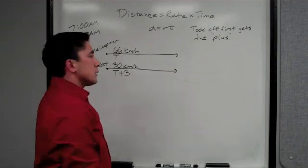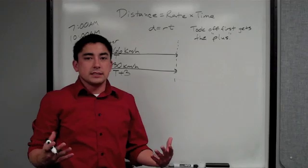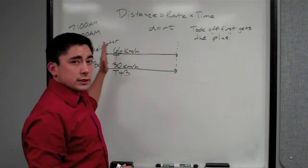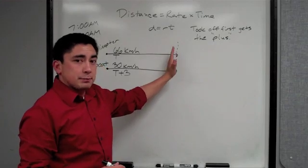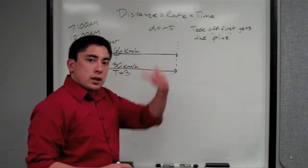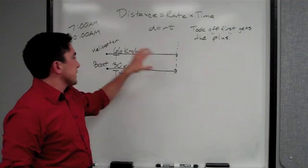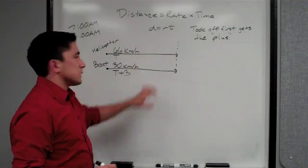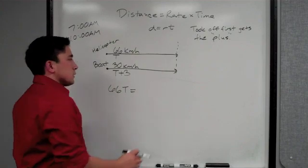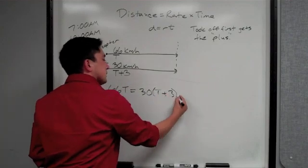We're talking about when will the helicopter overtake the boat? We're not going to add these distances because we don't know a total distance in between. They're leaving from the same spot, ending up at the same spot. So we can say that this distance is equal to this distance. So 66T equals 30(T plus 3).